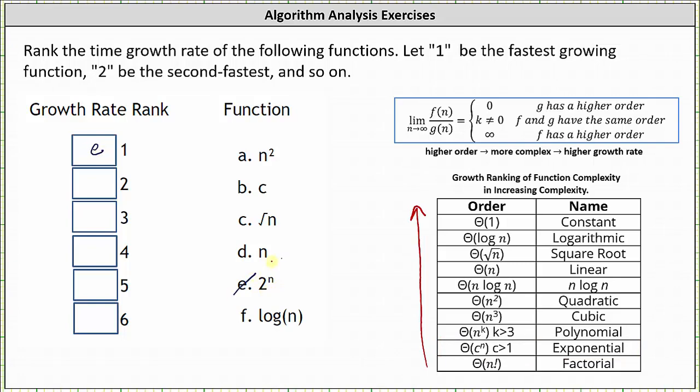Looking at the remaining functions and working our way up the table, the next fastest growing function is n squared, the quadratic function, and therefore two is a.